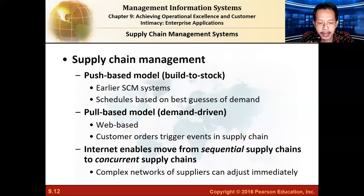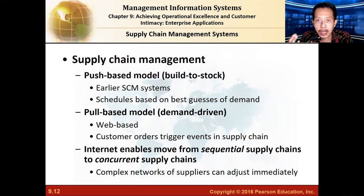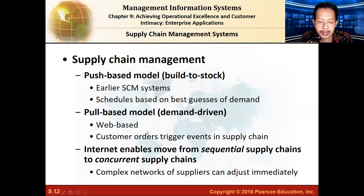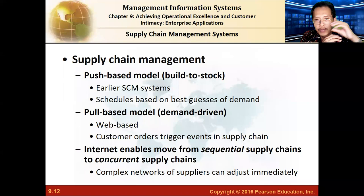There are two types of supply chain management models. The push-based model, or build-to-stock, means products are made to replenish warehouse stock when inventory runs low — this is the older model. The newer pull-based model bases production on actual customer demand, often web-based, referencing real customer data. Instead of sequential linear supply chains, you can also have concurrent or parallel supply chains working simultaneously.